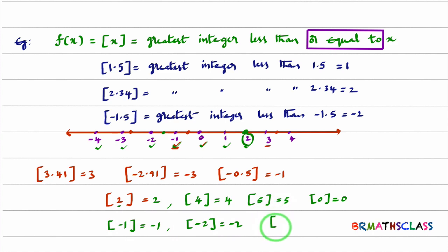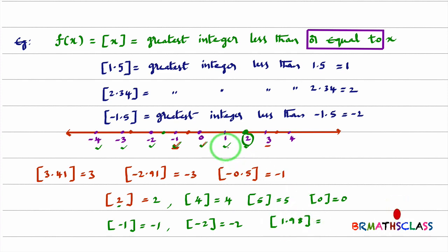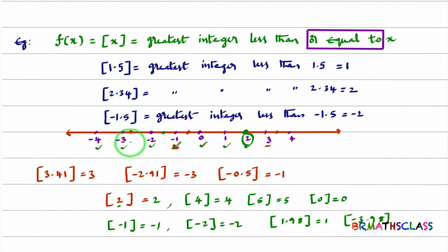Two last examples. Step 1.98: it is between integers 1 and 2, left side is 1, so step 1.98 is 1. Step minus 3.98: it is between minus 4 and minus 3, left side is minus 4, so step minus 3.98 is minus 4. I hope you understand how to calculate greatest integer values.